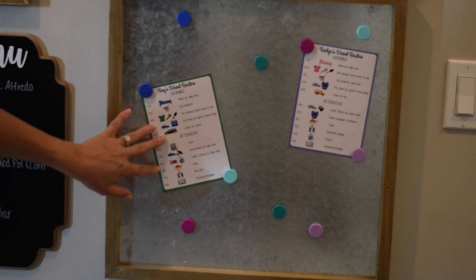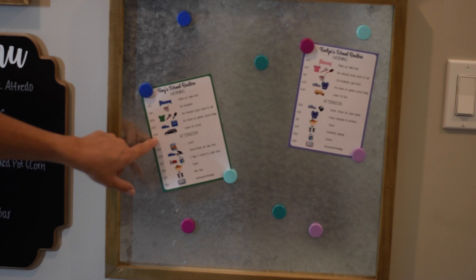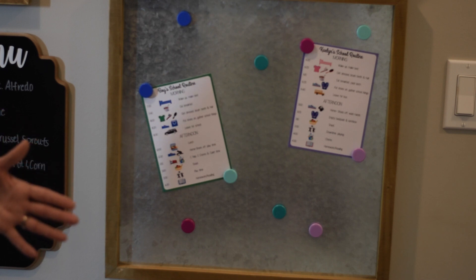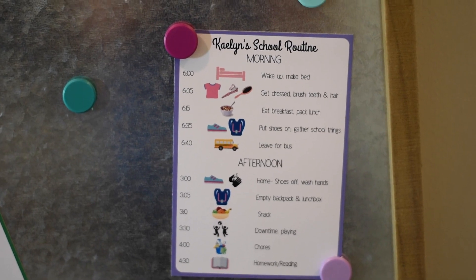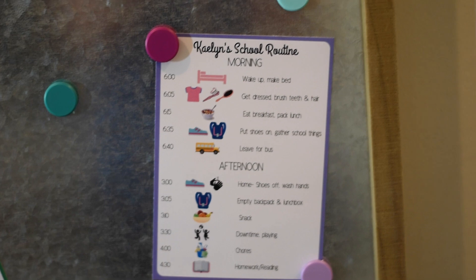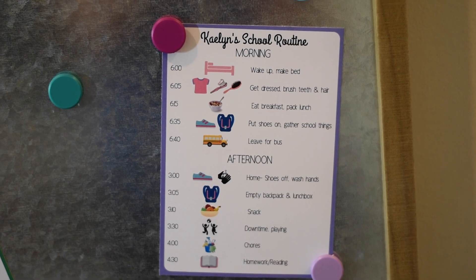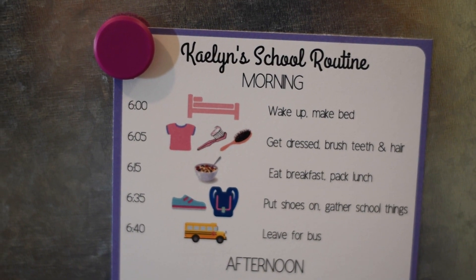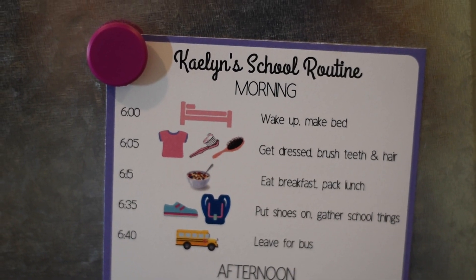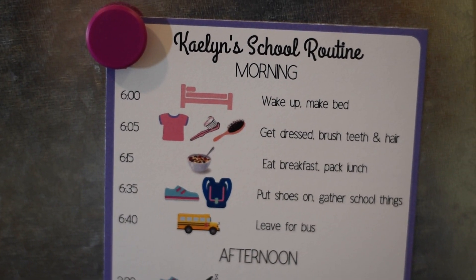I also keep the kids' schedules on here — their school routines for morning and afternoon, basically just weekdays while we're in school. This is my daughter; she's in second grade, getting up and going to school every morning. She rides the bus, so it has her morning routine and her afternoon routine for when she gets home from school. I have things with the time and pictures since the boys can't read yet.